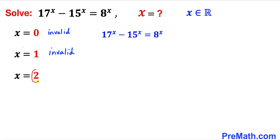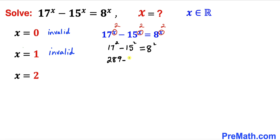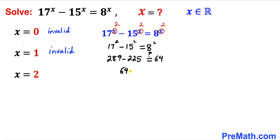Now let's try x equals to 2. Wherever we see x, we replace it by 2. This gives us 17 squared minus 15 squared equals 8 squared. We know 17 squared is 289, minus 15 squared which is 225. Subtracting the left hand side gives us 64, and on the right hand side 8 squared is also 64. Both sides are equal, so this is a true statement — x equals to 2 is our valid solution.